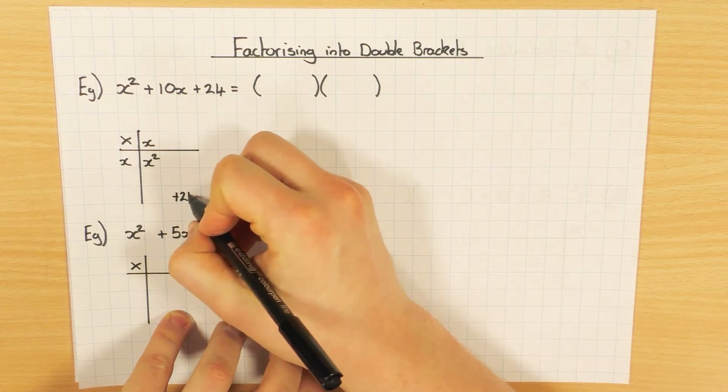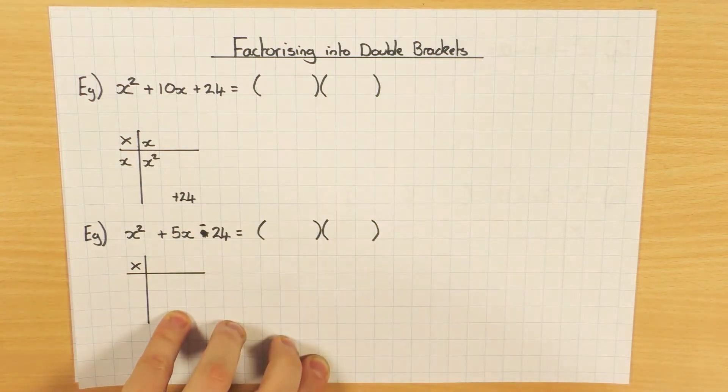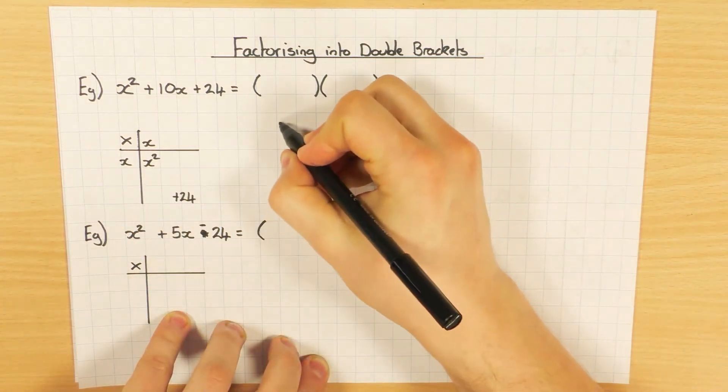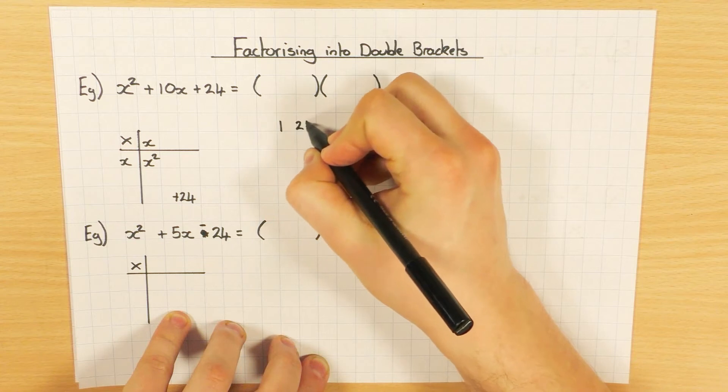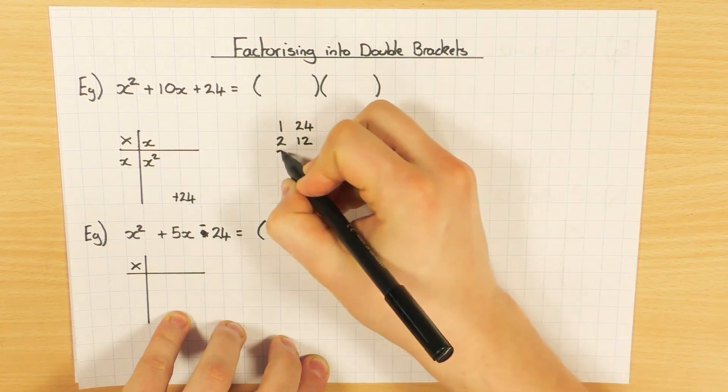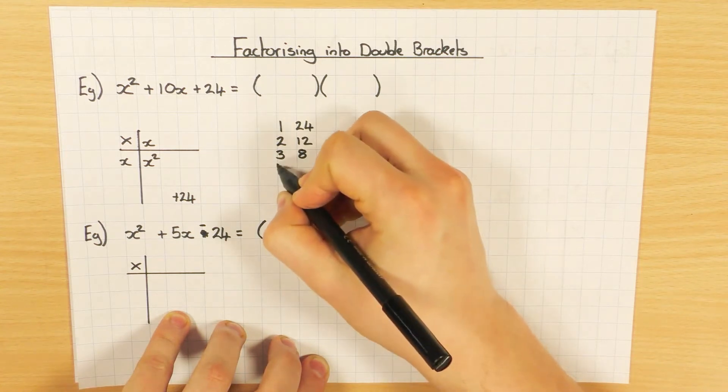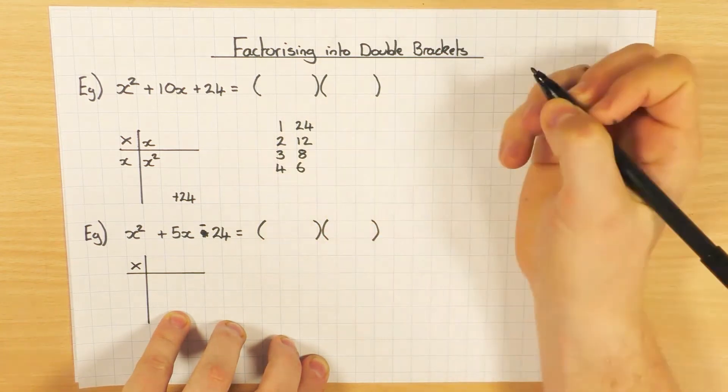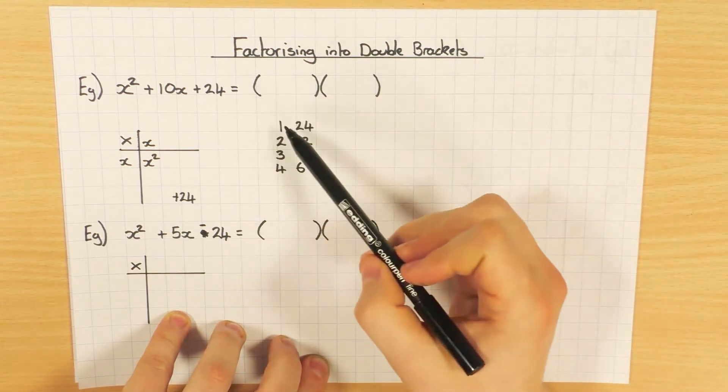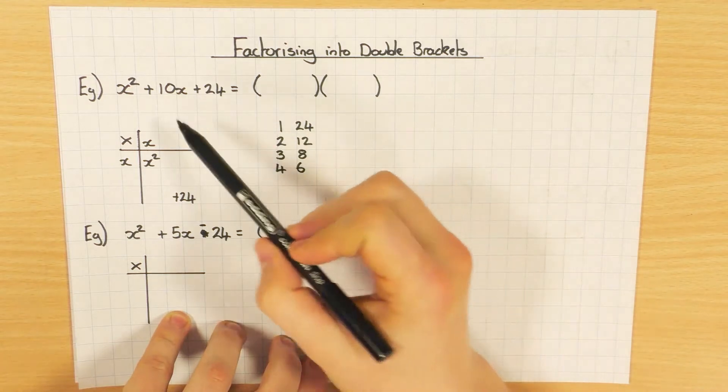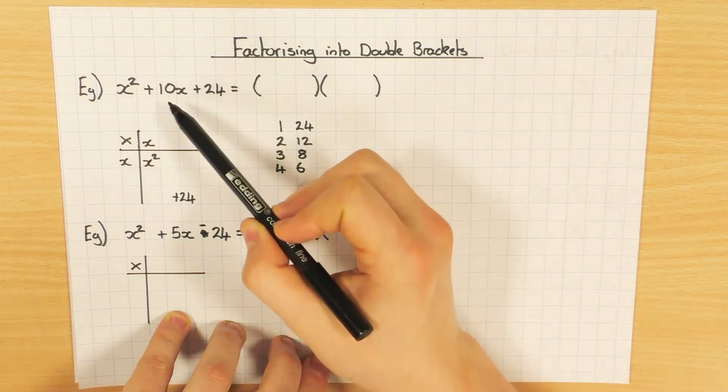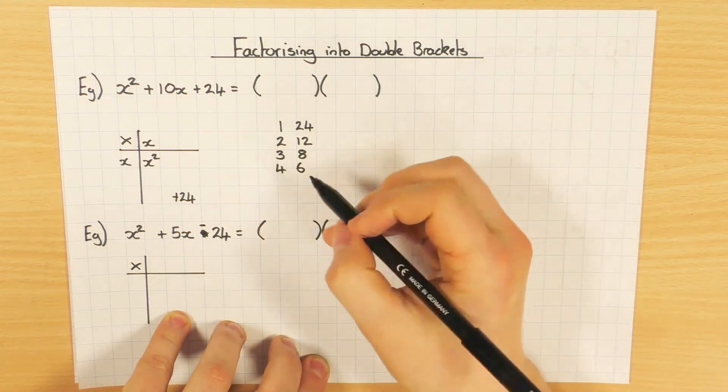The next thing is this plus 24, so plus 24 goes down there. Now, there's different ways that you can make 24 by multiplying, so let's write those down. You can have 1 times 24, 2 times 12, 3 times 8, and 4 times 6. Okay, now looking at these pairings, we then need to decide which one of those can I use to help me to get 10. So, which one of these can I add together to get 10x? So, let's have a look.